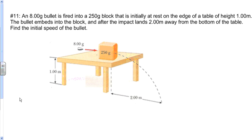The problem reads: an 8 gram bullet is fired into a 250 gram block that is initially at rest on the edge of a table of height 1 meter. The bullet embeds itself into the block and after the impact lands 2 meters away from the bottom of the table. We're asked to find the initial speed of the bullet.